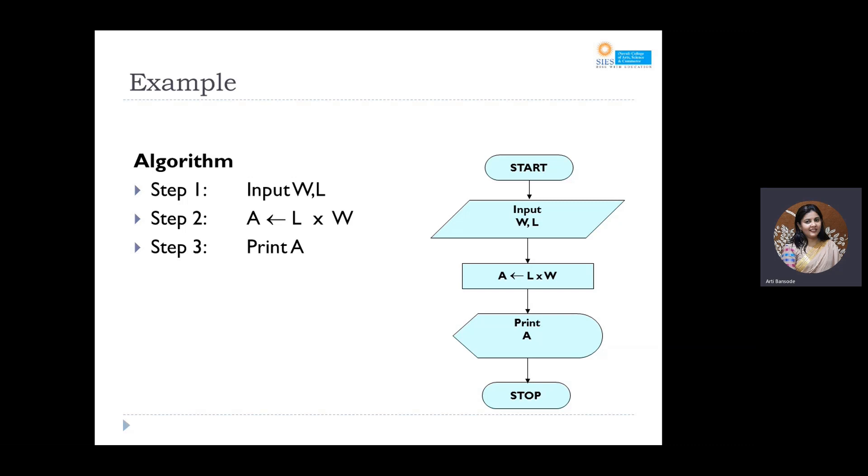User, whatever input the user gives, the first input will go to W, the second input will go to L. Step number two is performed by the computer, and step number three is also performed by the computer. So that is your algorithm for calculating the area of a rectangle. Now let's have a look at how the flowchart representation of the same algorithm looks like.